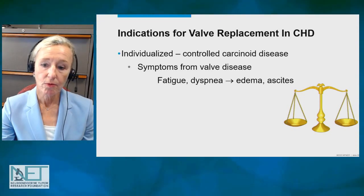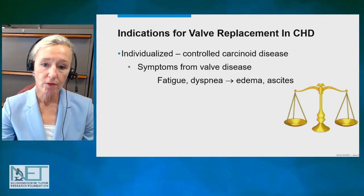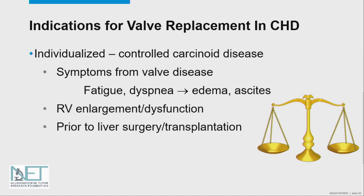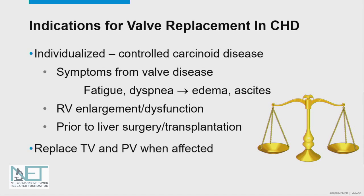What is the best timing, or what are the indications for intervention? Certainly if patients have symptoms related to carcinoid heart disease — fatigue, shortness of breath with activity, swelling — that interfere with quality of life, it's time to consider intervention with cardiac surgery. Right heart enlargement and dysfunction, or prior to liver surgery such as liver resection or transplantation, is another indication for surgical intervention. Our surgeons replace the tricuspid and the pulmonary valve when those are affected.